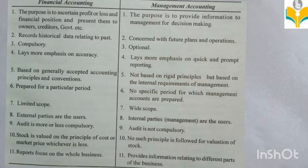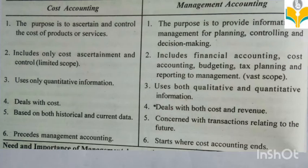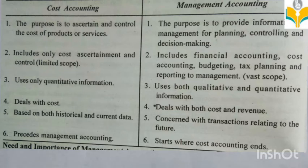Next topic: difference between management accounting and cost accounting. First: the purpose of cost accounting is to ascertain and control the cost of products or services — that is, cost per unit for each product or service. The purpose of management accounting is to provide information to management for planning, controlling, and decision making.